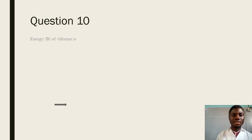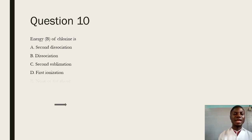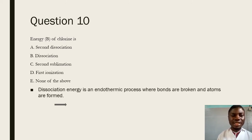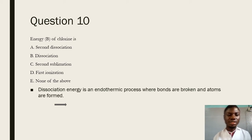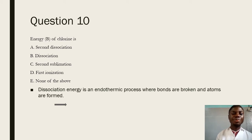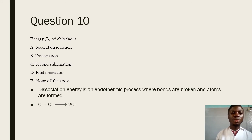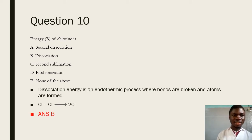Question 10 says: energy B of chlorine. Going back to our scheme, energy B of chlorine represents the dissociation energy of chlorine, which is endothermic because it leads to the breaking of bonds. Chlorine, being a diatomic molecule, is made up of two chlorine atoms held together by a single covalent bond. Heat energy is required to break the bond and liberate two chlorine atoms, and this energy is known as dissociation. The answer is B.